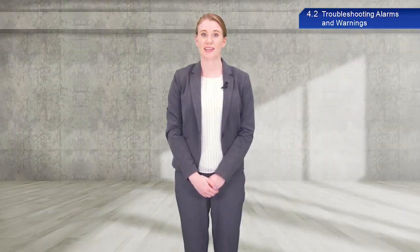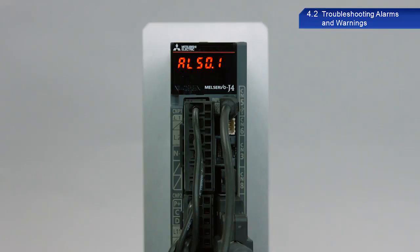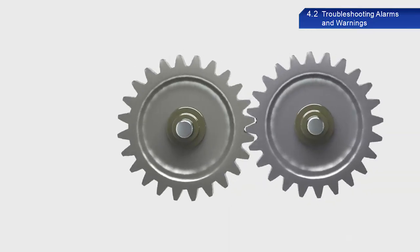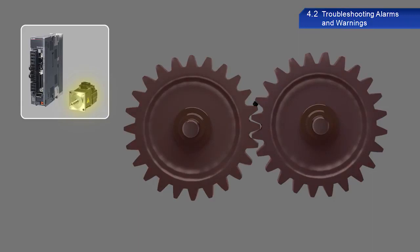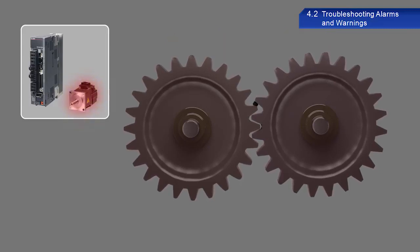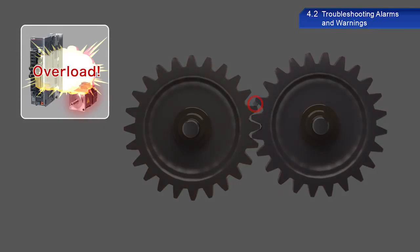Besides noise, harmonics and leakage current can also negatively affect servo systems. The alarm code 50.1 is the Thermal Overload Error 1 during operation alarm. This alarm occurs when cables are disconnected or scrap material is jamming equipment. Objects can jam moving parts of equipment causing them not to move correctly. Excessive current may then be output to try and move the part normally, which causes excessive load and triggers this alarm. If this happens, check mechanical parts carefully. If this alarm occurs when there are no mechanical issues, wiring may be disconnected or connected incorrectly, so check the wiring.